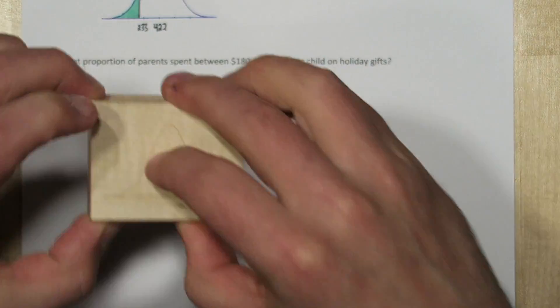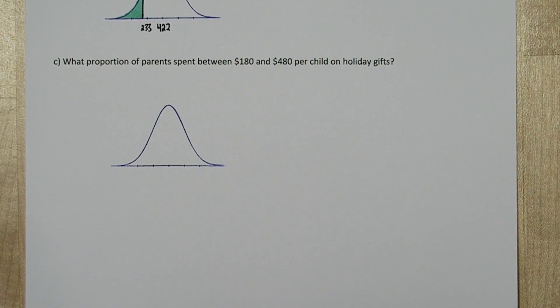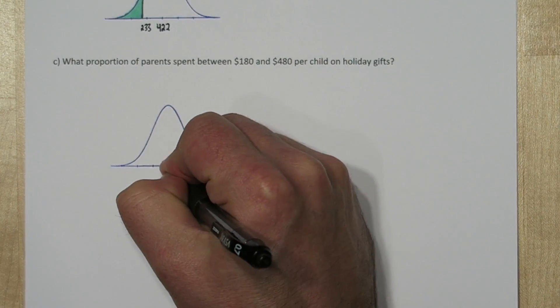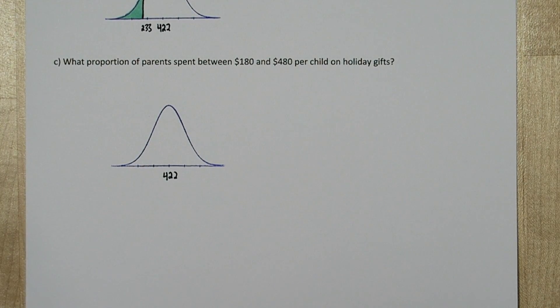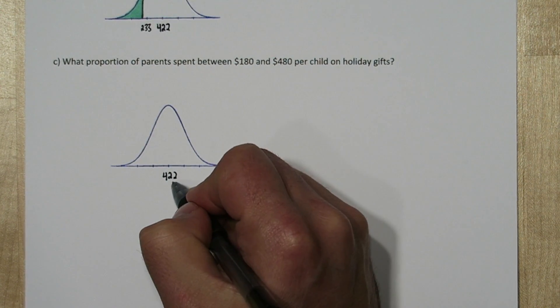Let's stamp one more normal distribution for our last problem. Now our mean is still 422, right in the middle. But we're trying to figure out what proportion spent between 180 and 480. Let's start by labeling one standard deviation in each direction.